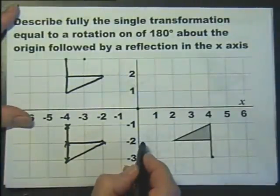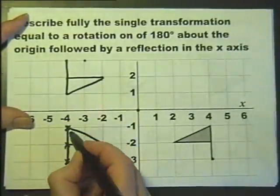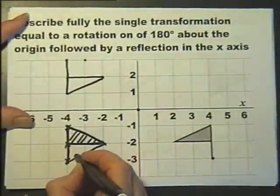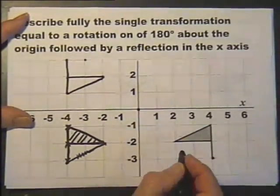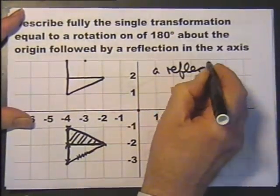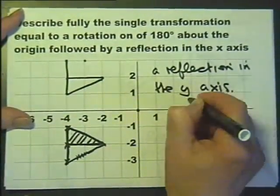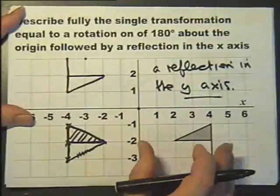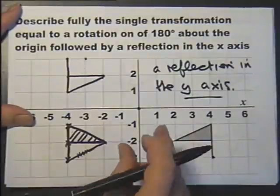That's the flag there. The answer is easy — it's a reflection in the y-axis. Describe the single transformation equal to those two: a reflection in the y-axis. I hope you appreciate it's quite early in the morning. But you can see how one needs to check things, so tracing paper is a pretty cool idea.